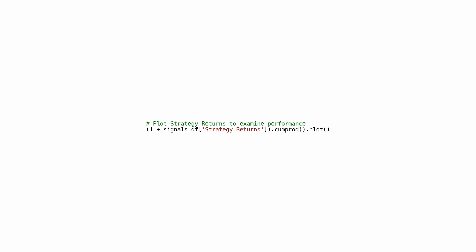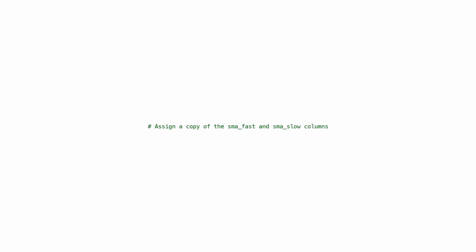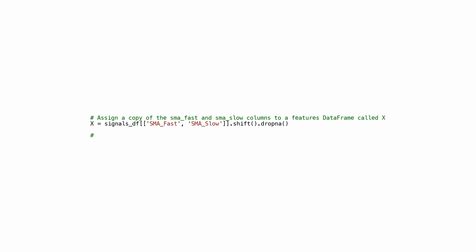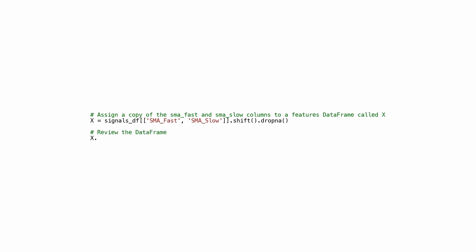This Python code creates a DataFrame called X by copying the columns SMA_FAST and SMA_SLOW from the signalsDF DataFrame. The columns are then shifted — each value is moved to the previous row — and any resulting missing values are dropped. This new DataFrame X contains the shifted values from the original columns. The dot-head function is called to view the first few rows. This is useful for creating lagged versions of features for time series data analysis.